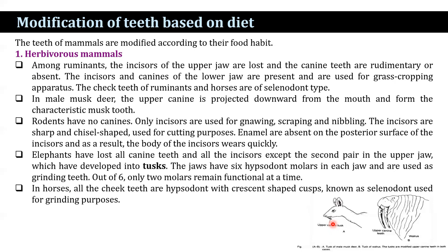In male musk deer, the upper canine projects downward from the mouth, forming the characteristic musk stool. Elephants have lost all canine teeth and all incisors except the second pair in the upper jaw, which have developed into tusks. The jaw has six hypsodont molars in each jaw used for grinding. Out of six, only two molars remain functional at a time. In horses, all the cheek teeth are hypsodont with crescent-shaped cusps, known as selenodont, used for grinding purposes.